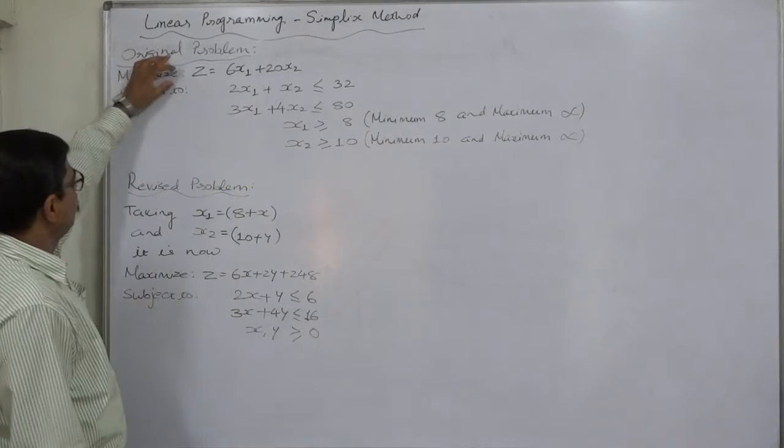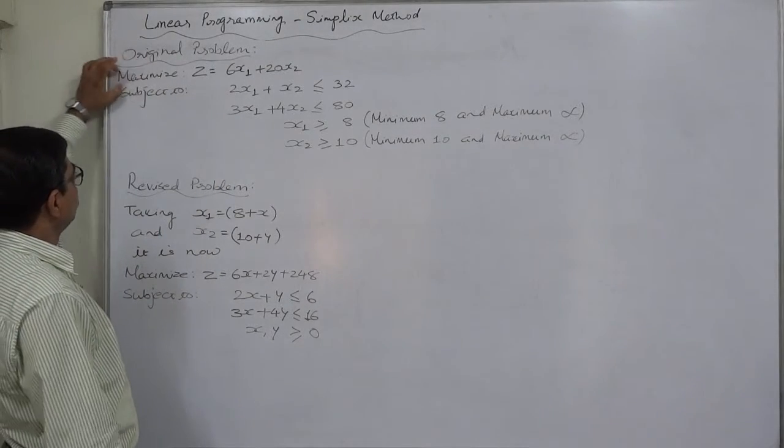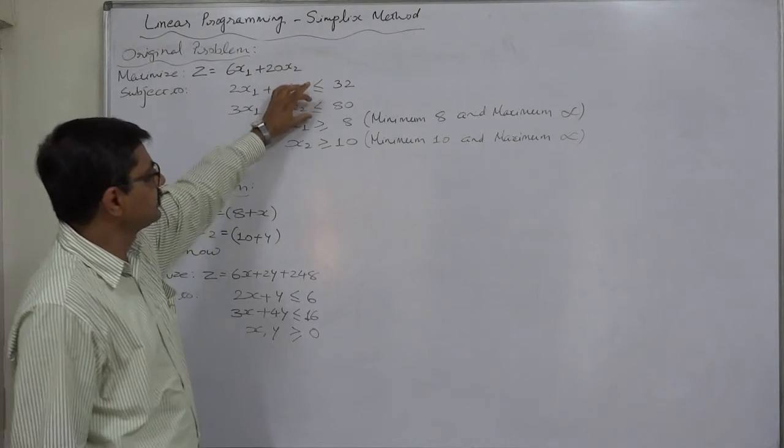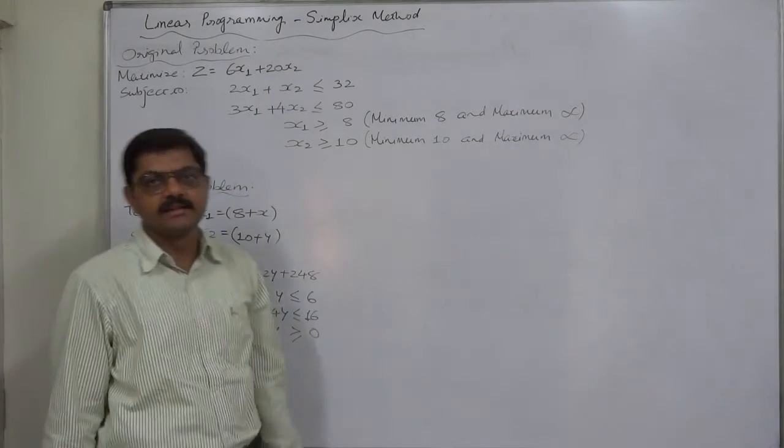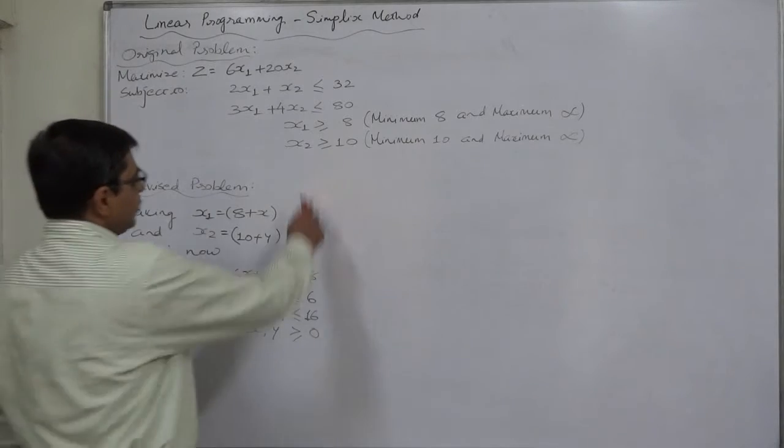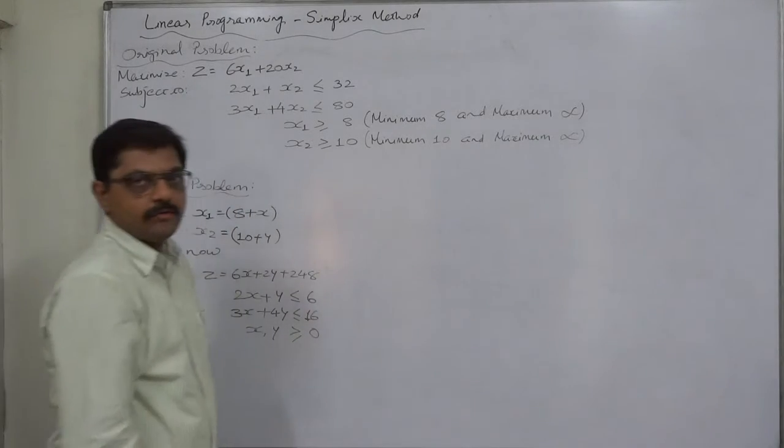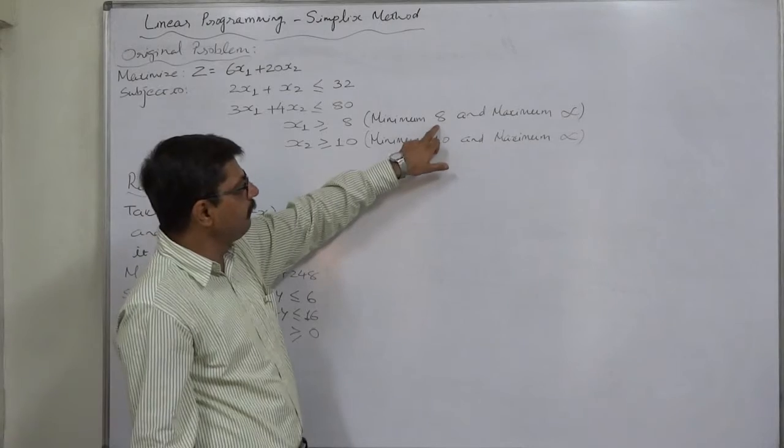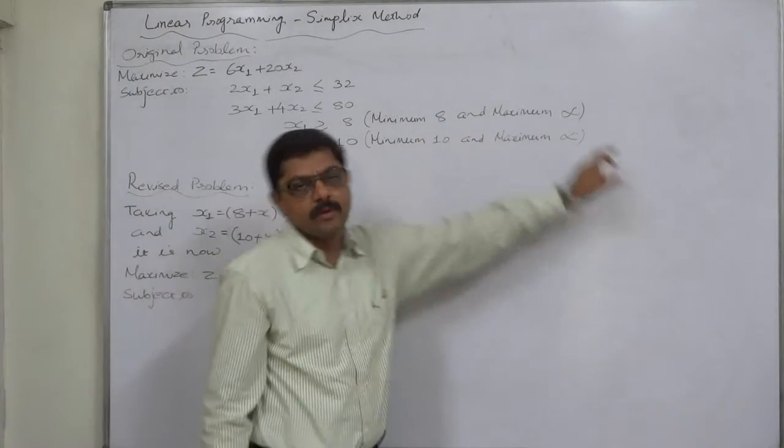Now, the problem is having an objective of maximization and as we know that with maximization generally the sign less than or equal to matches. But in this case x1 is given to be greater than or equal to 8. The interpretation is x1 takes minimum value 8 and maximum up to infinite.